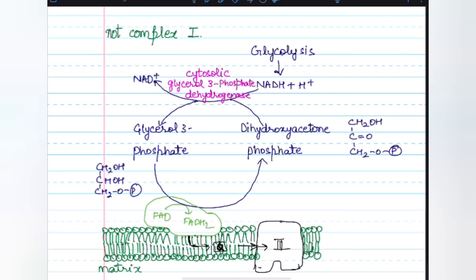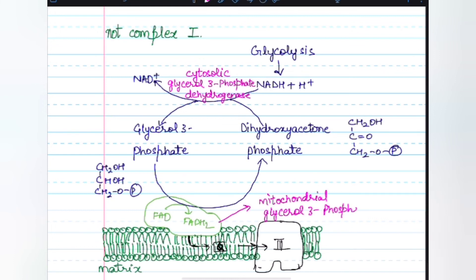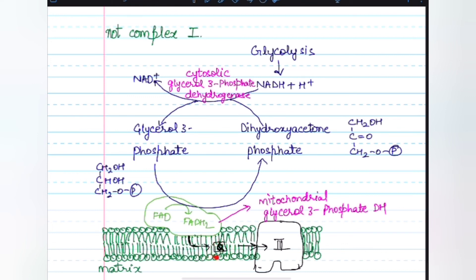There is also an isozyme of this enzyme present in the mitochondria, called mitochondrial glycerol-3-phosphate dehydrogenase, which is bound to the outer face of the inner membrane. So there are two isozymes: cytosolic and mitochondrial. The mitochondrial isozyme transfers two reducing equivalents from glycerol-3-phosphate in the intermembrane space to ubiquinone (Q), from which they are passed to complex 3 of the electron transport chain.